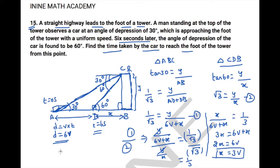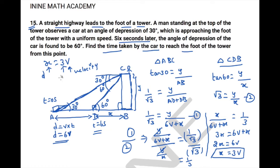So x is the distance travelled and v is the velocity. From x = 3v we can observe that 3 is nothing but the time taken by the car to travel distance x. Thus the time taken by the car to reach the foot of the tower is 3 seconds.